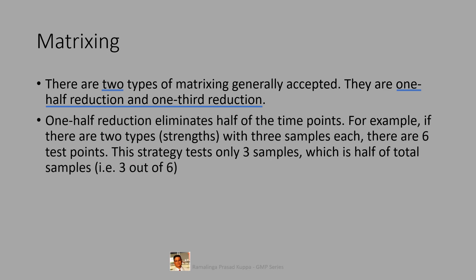One half reduction eliminates half of the time points. For example, if there are two types, that means two strengths with three samples each, there are six test points. The strategy is to test only three samples, which is half of the total samples. That is three out of six. So in one half reduction, half of the total time points is eliminated. In this example, three out of six are eliminated.